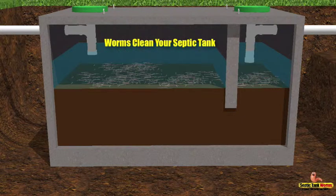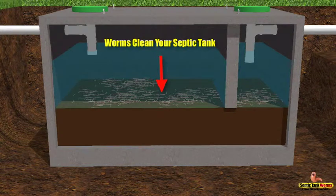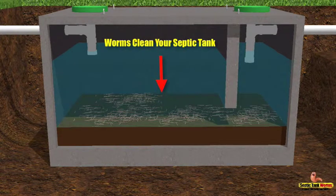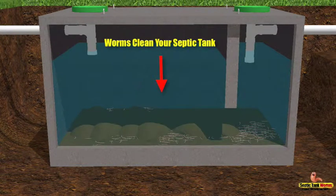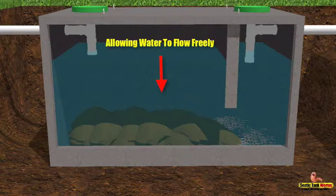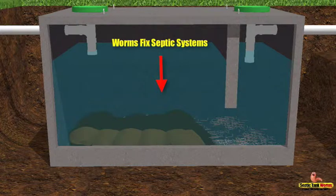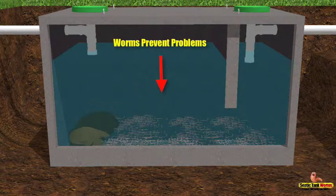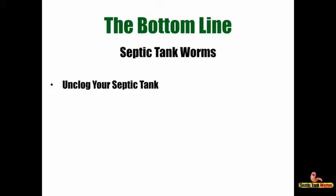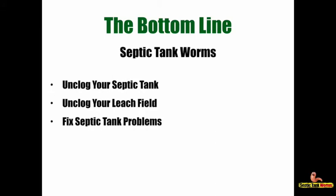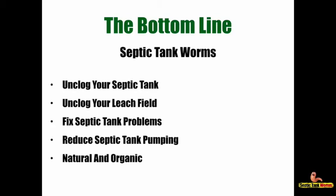While the worms are at work in your drain field pipes, they're also at work in your septic tank — eating that sludge and completely cleaning it out — once again allowing wastewater to flow freely from your property into the tank and into the drain field. The bottom line is that septic tank worms unclog your septic tank, unclog your leach field, fix septic tank problems, reduce septic tank pumping times, and they're natural, organic, and will save you thousands of dollars on repair costs.